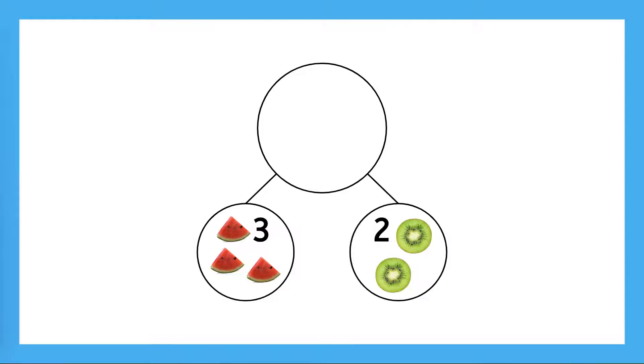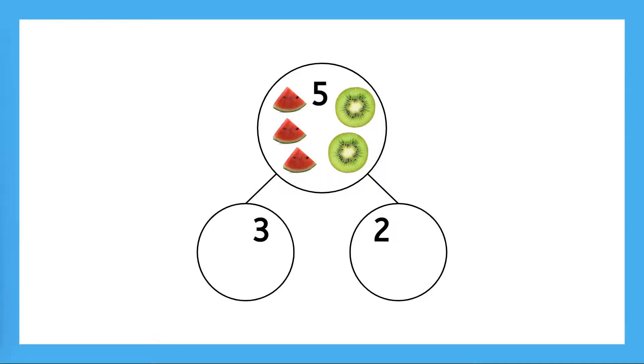You can follow along with me here or use your own counters to make these parts. Let's count to find how many are in this whole group. One, two, three, four, five. So, our parts are two and three and our whole is five. Nice thinking!